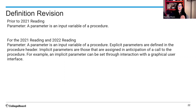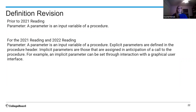Question: can a student get full points if their list and procedure meet requirements but part of their program isn't optimized? It depends on the rubric row. For row 2, they'll get it for having a list. But for row 3 — managing complexity — we'll check whether they actually used the list to manage complexity. We'll see some examples of that tonight.